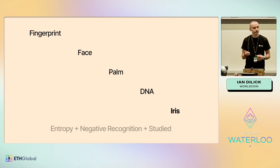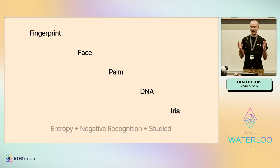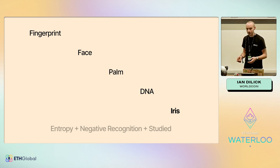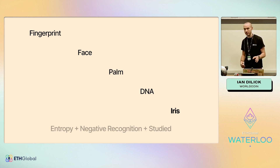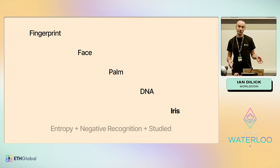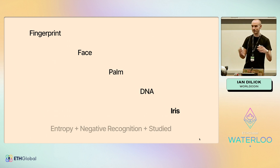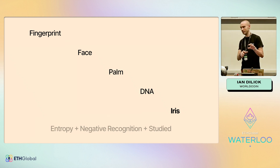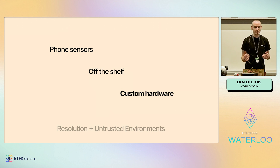We settled on iris recognition. Your iris has a ton of entropy in it, it's non-invasive, and to get a high level of detail it requires your attention and focus — and inherently your consent. It's very unique: even identical twins will have very different irises. You can't tell much about who a person is just by knowing what their iris looks like. Additionally, iris recognition has been studied for decades. The Apple Vision Pro uses tech quite similar to what we do, but for authentication rather than proving uniqueness, so the level of detail it captures isn't sufficient for signing up for Worldcoin.